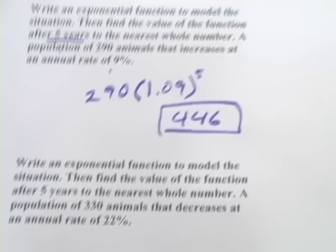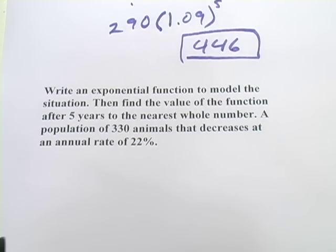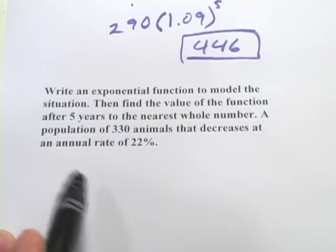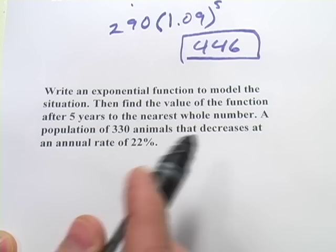All right, one more. It says, write an exponential function to model the situation, then find the value of the function after 5 years. So another one. A population of 330 animals that decreases at an annual rate of 22%.